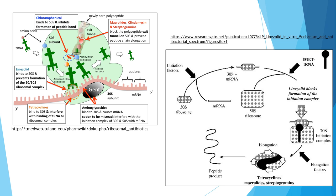A few antibiotics work on the ribosome, which is part of the translation step of protein synthesis. So any antibiotic working on the ribosome is working on translation, or globally on protein synthesis. The ribosome has a 30S and a 50S subunit that combine to form the 70S complex. The most important antibiotic working on the 30S subunit in orthopedics is the aminoglycoside, and also tetracycline.